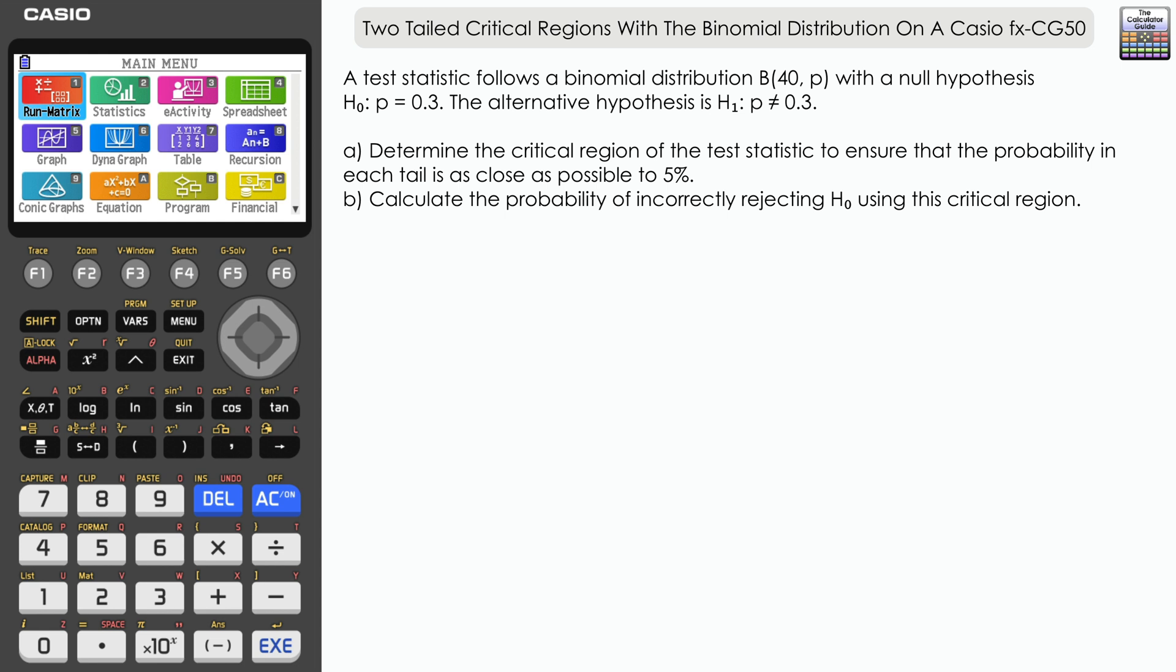Part a: Determine the critical region of the test statistic to ensure that the probability in each tail is as close as possible to 5%. So essentially we're looking for a 10% significance level in total. Part b: Calculate the probability of incorrectly rejecting H₀ using this critical region.